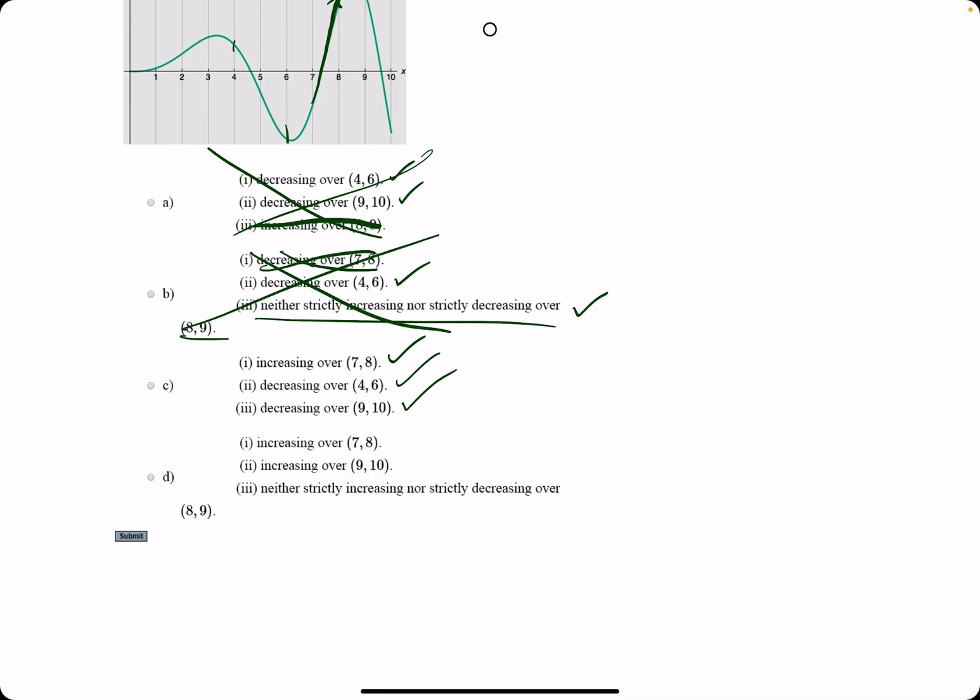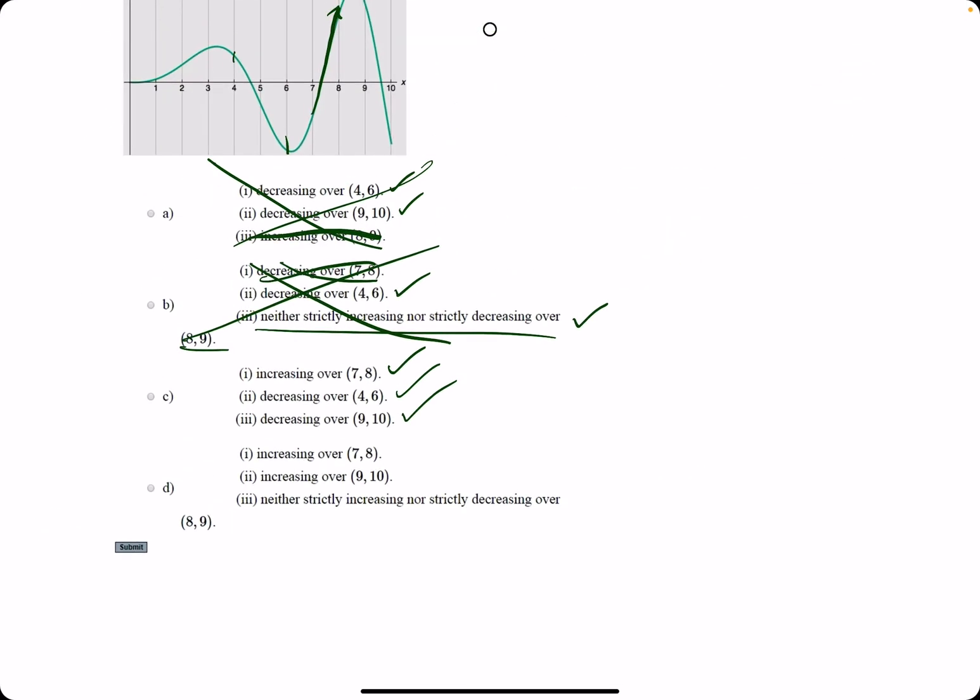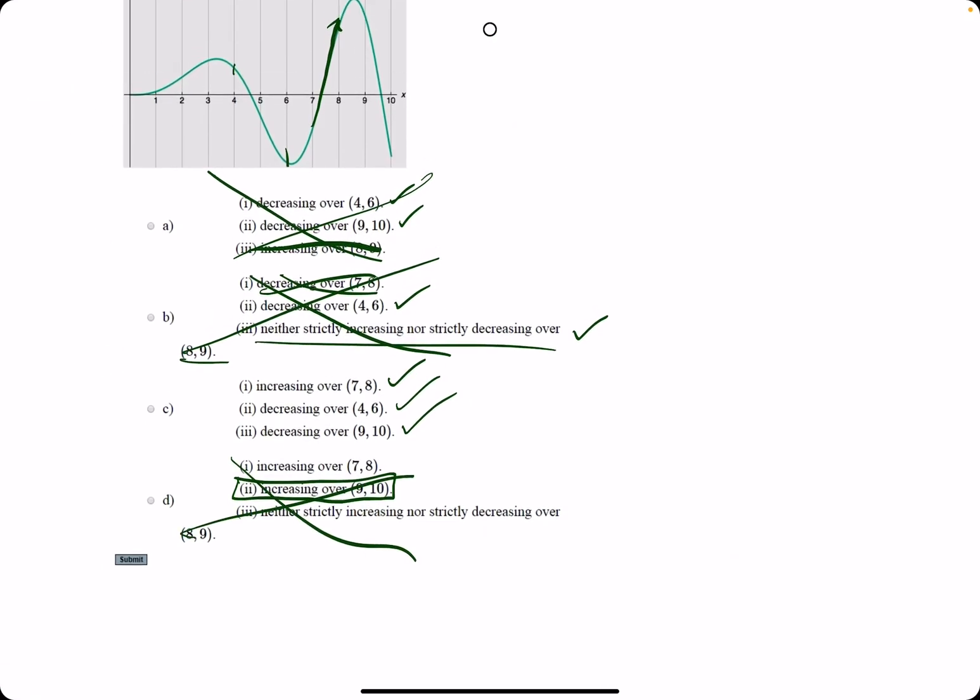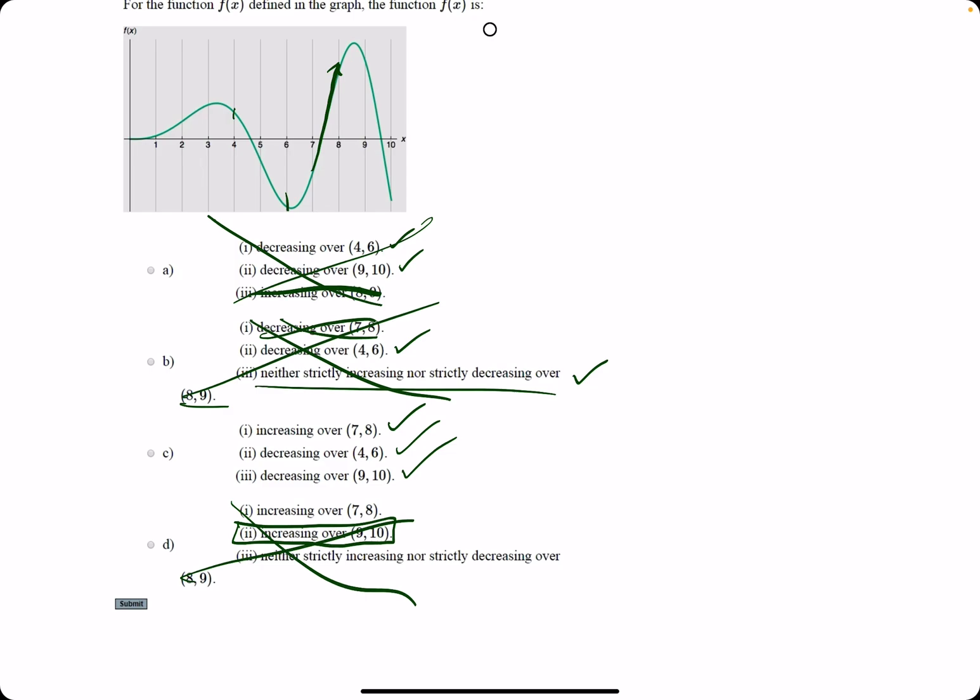Let's see if we can find the false one in option d. Increasing over (9, 10) would do it because we said it's actually decreasing (9, 10). So eliminating the others and verifying that c is correct, c is our best answer.